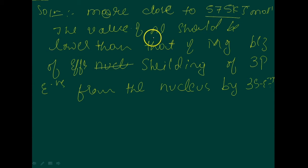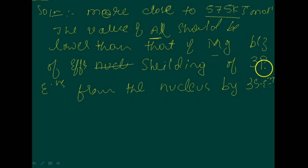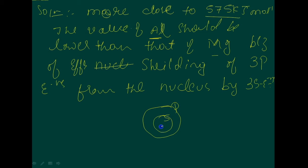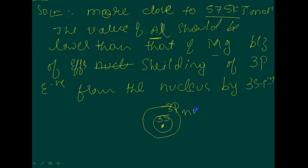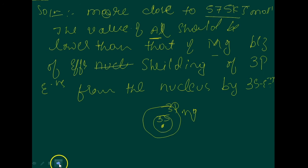So the value of aluminium should be lower than that of magnesium because of effective shielding of 3p electrons from the nucleus by 3s electrons. Consider this as the s orbital and this as the p orbital — the 3s orbital is very close to the nucleus, so the shielding effect is lesser for the 3p electrons. Therefore, the effective nuclear charge for magnesium is less, which explains the problem.